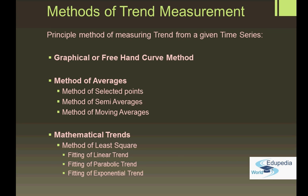We will only be seeing the linear trend for now. So we will basically be looking at the graphical method, all three methods of averages, and in the method of least squares we will use the fitting of linear trend. In this session we will begin with the graphical method and move on with the method of averages, covering the method of selected points and the method of semi-averages. In subsequent videos we will see the moving average and linear trend methods.